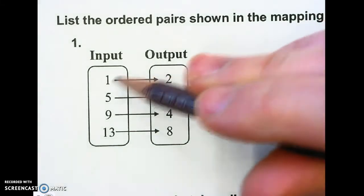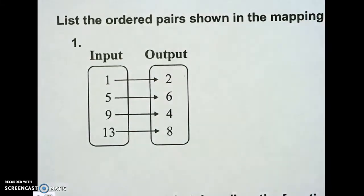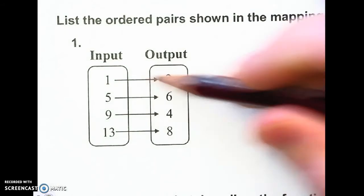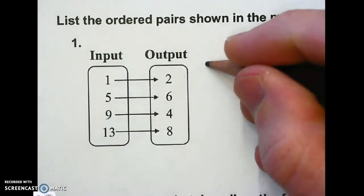I'm going to take these coordinate points right out of the mapping diagram. It tells them to me right here. One arrow two tells me it's one comma two.